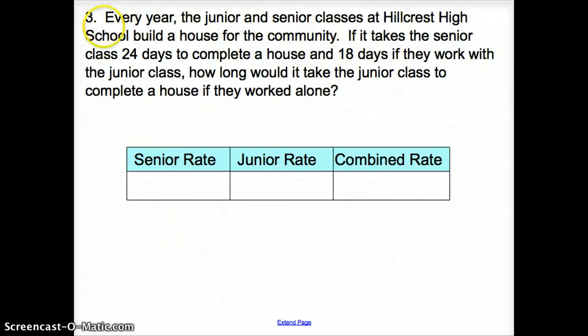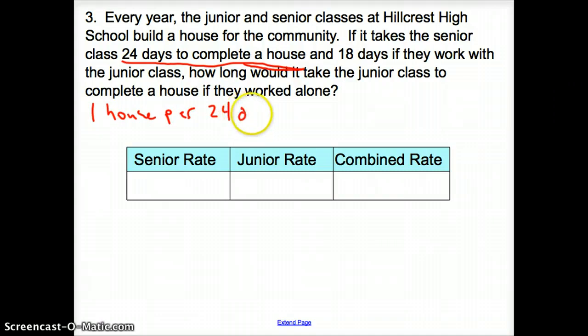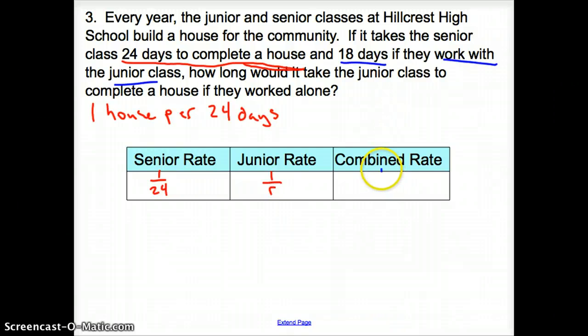For our last question, every year the junior and senior classes at Hillcrest High School build a house for the community. If it takes the senior class 24 days to complete a house and 18 days if they work with the junior class, how long would it take the junior class to complete the house if they worked alone? If I wrote this as one house per 24 days, that sounds like a rate. The senior rate is 1 over 24. I'm going to leave the junior rate as 1 over R, and then their combined rate is 1 over 18.